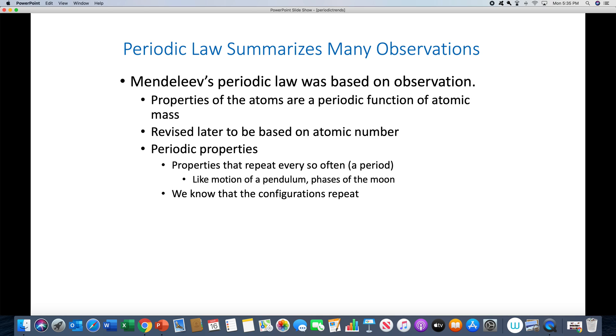So for example, the motion of a pendulum going back and forth - its position in terms of time is going to repeat itself, or the phases of the moon. If you look at what the moon looks like as a function of day, the moon phases repeat. It gets bigger, bigger, bigger, smaller, smaller, smaller. And you can see that the electron configurations repeat as well.